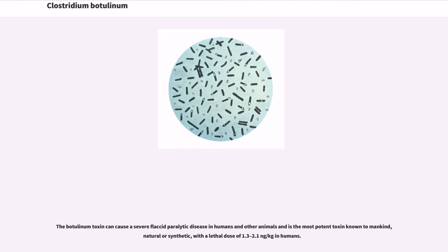The botulinum toxin can cause a severe flaccid paralytic disease in humans and other animals and is the most potent toxin known to mankind, natural or synthetic, with a lethal dose of 1.3 to 2.1 nanograms per kilogram in humans.